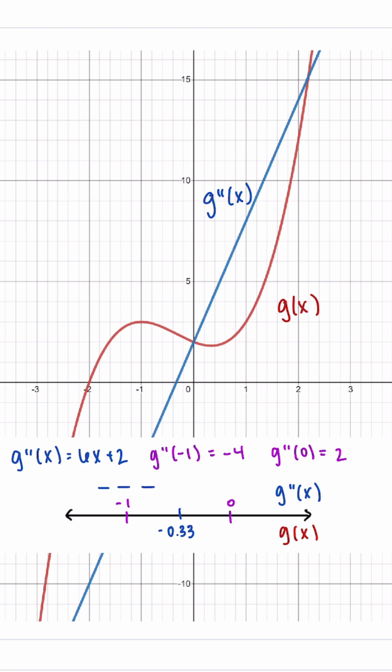So here in our first interval, we got that the second derivative was negative, which tells us our function is concave down. On our other interval, we got that the second derivative is positive, which tells us our function is concave up.